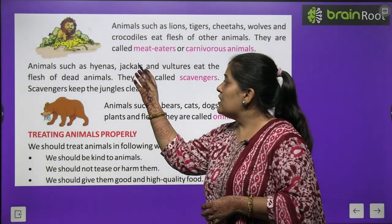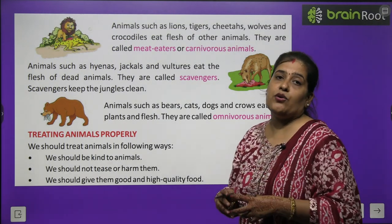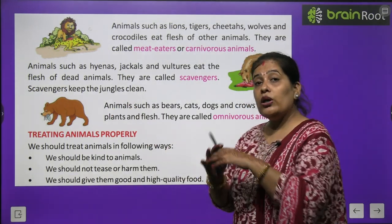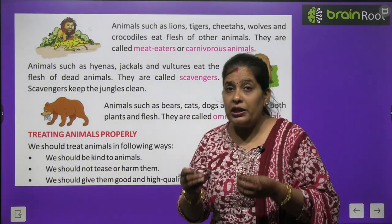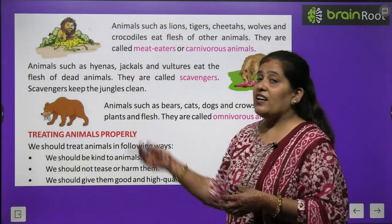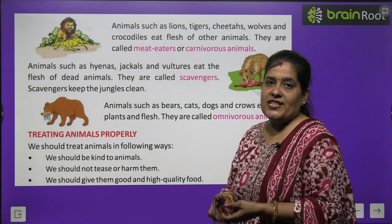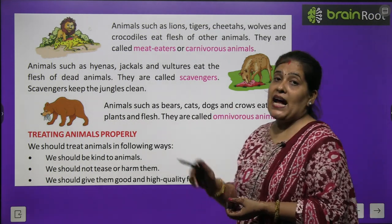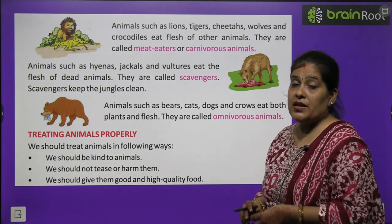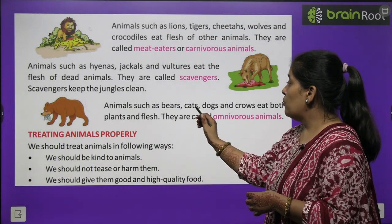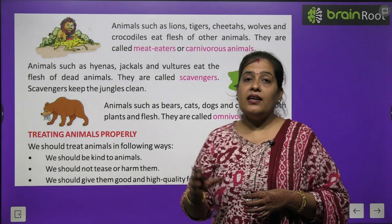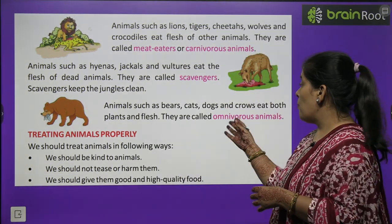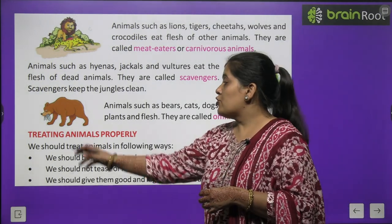Some animals like hyena, jackal or vulture eat dead animals. They are called scavengers. They help keep the forest clean. Animals such as bear, cats, dog and crow eat both plants and flesh. They are called omnivorous animals.